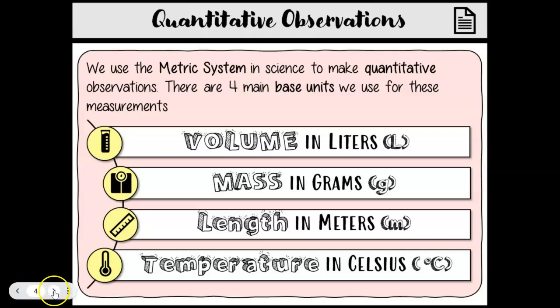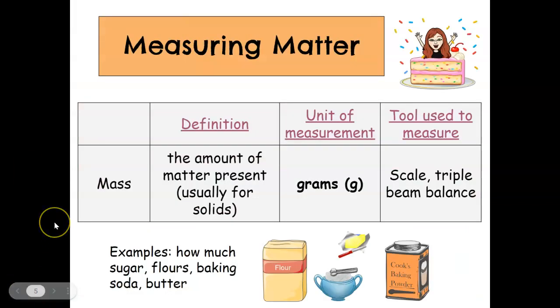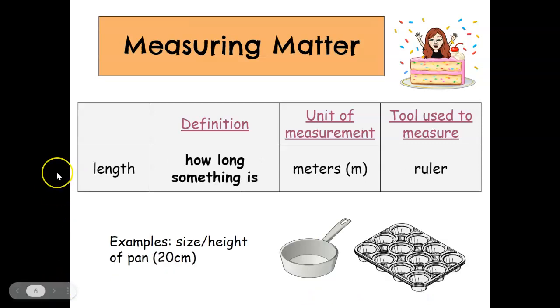All right, so starting with mass. Mass is just the amount of matter present, usually this is for solids. It is measured in grams and we can use a scale or a triple beam balance in order to measure the mass of something. There are also digital scales now that are really prevalent in a lot of high schools, so you might have seen that. If we are going to measure the length of something, so how long it is, we are going to use again that base measurement of meters. So the base is going to be meters and then we would use a ruler or a yardstick to measure that.